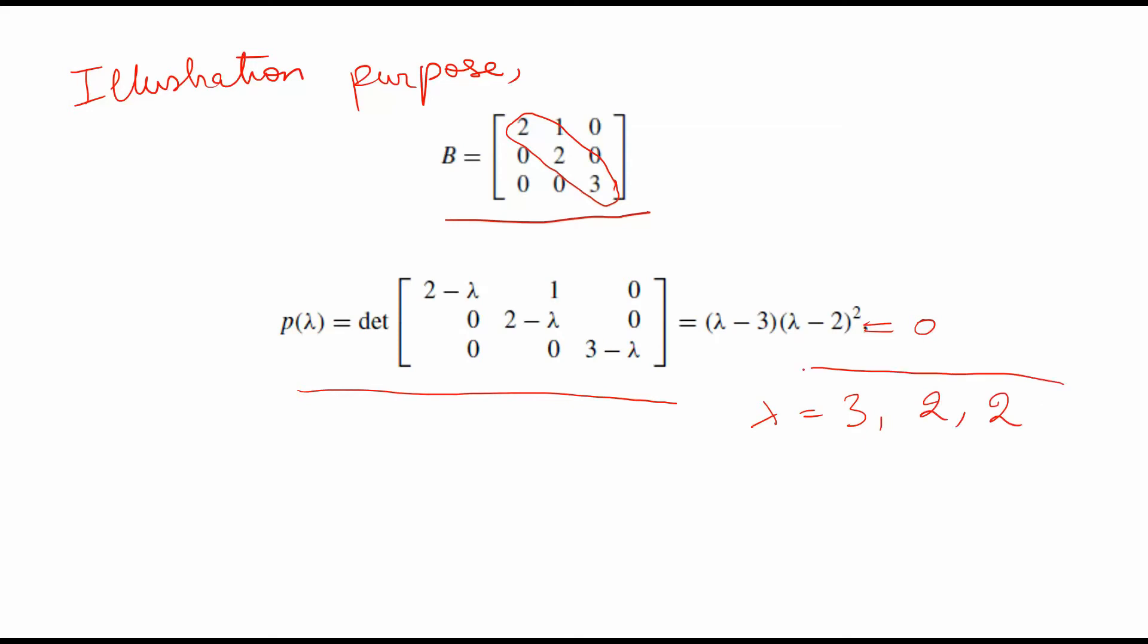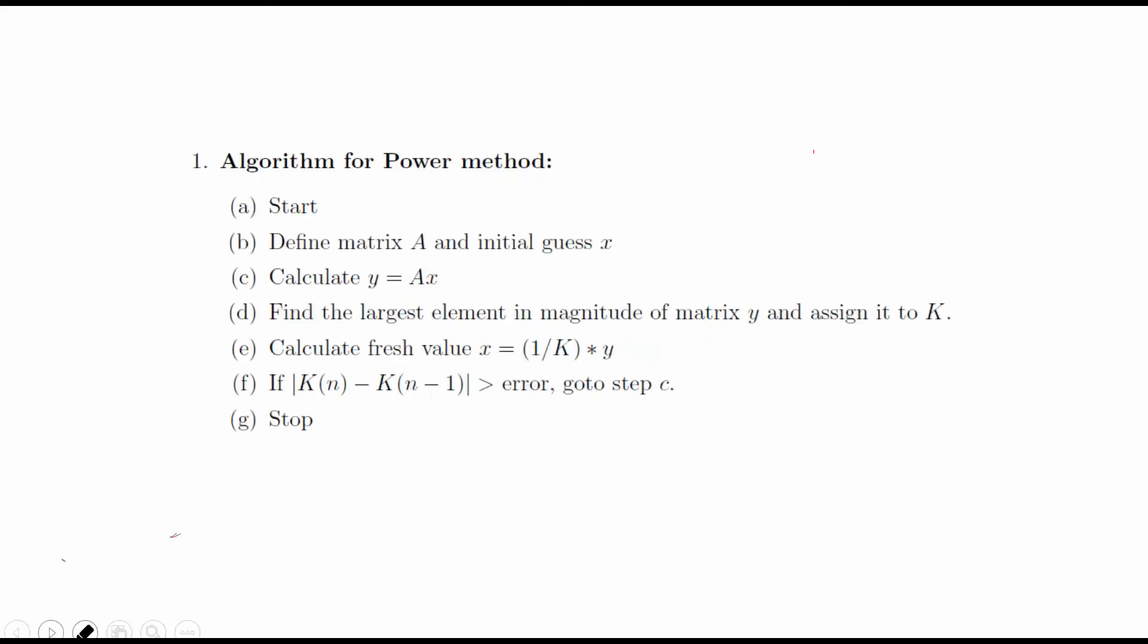Now let us see how we can find the largest eigenvalue with our iterative technique. Iterative techniques are useful when you have a large system and you are not able to find the eigenvalues so quickly like we have done here. So what you can do is use the iterative technique. Now we will see a simple algorithm for the power method. Firstly we need to write down the matrix A for which we need to find the largest eigenvalue and we will start with an initial guess x.